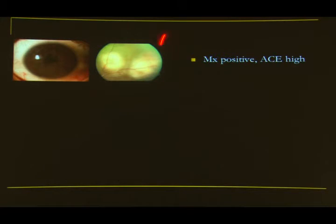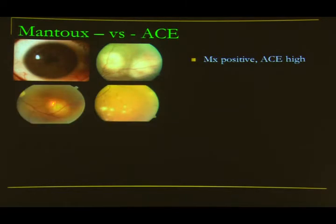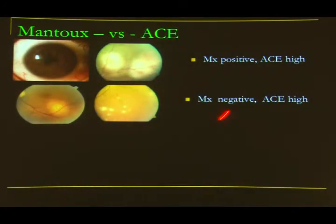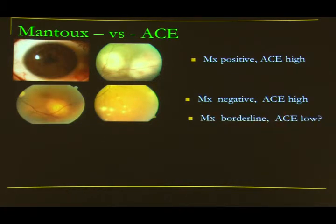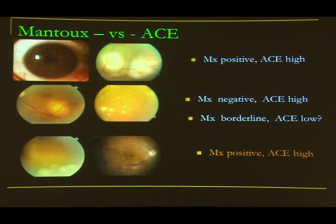If a choroidal nodule with negative Mantoux and high ACE points toward sarcoid, test accordingly. When Mantoux is borderline and ACE is low, diagnosis is uncertain. In intermediate uveitis with retinal vasculitis, Mantoux positive and ACE high still requires additional supportive evidence before concluding TB.